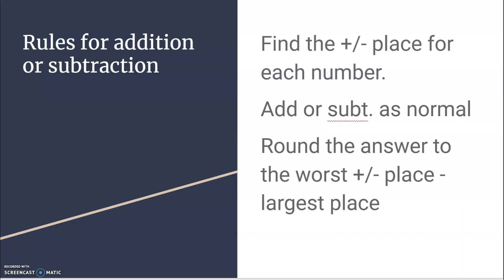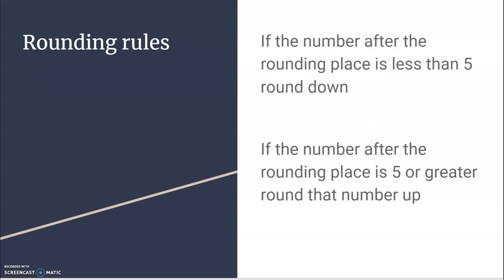Write these down. Here are the rules for adding and subtracting numbers in science. First, you find the plus or minus place for each number — 65 million years was possibly plus or minus a million years. Then we add or subtract as normal, and round the answer to the worst plus or minus place, which happens to be the largest place. The 38 years was probably plus or minus a year, but 65 million was plus or minus a million years, so we round to the worst.